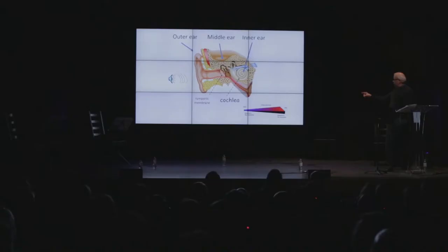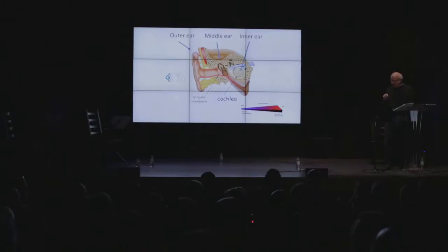The inner ear is the cochlea — a snail-shaped structure, hence its name — which houses what's called the basilar membrane, shown unwrapped at the bottom of the slide. The auditory receptors, called hair cells, are located in this membrane. High-pitched sounds activate the narrow part of the membrane, whereas low-pitched sounds activate the distal, wider end. In this way, the basilar membrane resolves the different sound frequencies or pitches that comprise a sound like a Bach fugue.